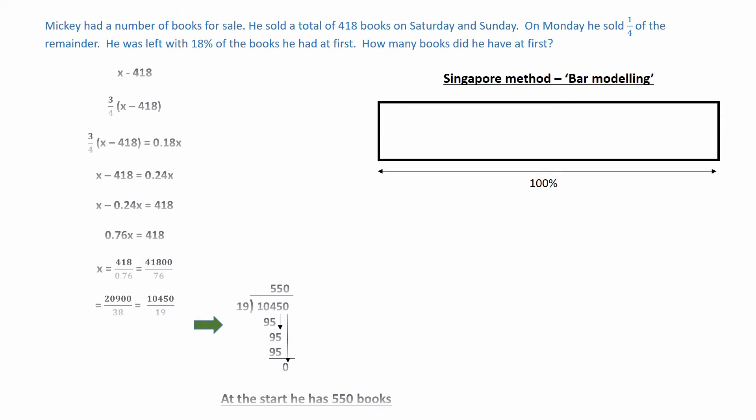The Singapore method, bar modelling, uses a rectangle to represent the total number of books at the start. Shade the initial 418 books sold.